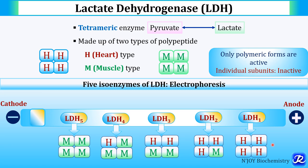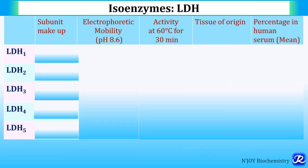To summarize: LDH1 is H4, LDH2 is H3M1, LDH3 is H2M2, LDH4 is H1M3, and LDH5 is M4.